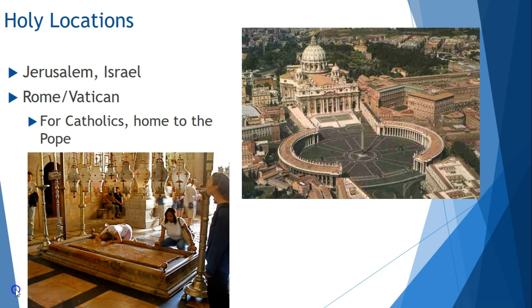For most Christians, Israel is considered the Holy Land and is the land of the Bible. Many Christians make pilgrimages to the sacred sites for Christianity in Israel, and specifically around Jerusalem. These include places like the Church of the Holy Sepulchre, which according to tradition contained two of the holiest sites in Christianity: the site where Jesus was crucified, also known as Calvary or Golgotha, and the empty tomb of Jesus. The Church of the Holy Sepulchre was originally built in 335 CE and was later rebuilt and restored. Also in Jerusalem is located the Mount of Olives and Gethsemane, where Jesus prayed and slept the night before his crucifixion. Israel is also the location of Jesus' birthplace, Bethlehem.